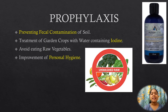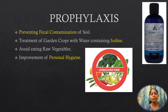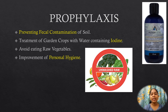Prophylaxis. Ascariasis can be eliminated by preventing fecal contamination of soil. Treatment of vegetables and crops with water containing iodine at 200 parts per million for 15 minutes kills the eggs and larvae of Ascaris and other helminths. Avoid eating raw vegetables and fruits. Improve personal hygiene and treat infected persons, especially children.